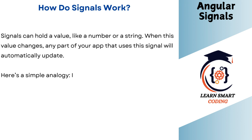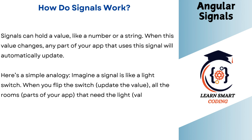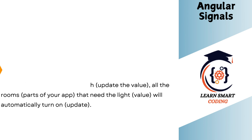Let's take a simple analogy. Imagine a signal is like a light switch. When you flip the switch — like updating the value — all the rooms, which represent parts of your app that need the light (the value), will automatically turn on, which is the update happening.